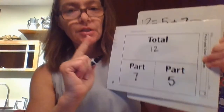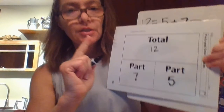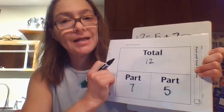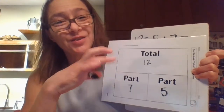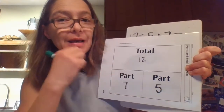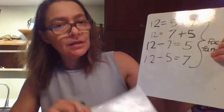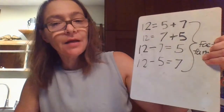If you know one of the equations, you can get the other three. The only exception is a doubles fact — a doubles fact has a smaller family of only two equations, because the turnaround fact is the same. The two parts are the same, so it mirrors itself. Every other parts-and-total combination will have four family members.